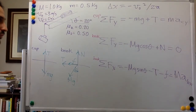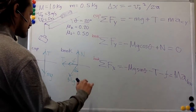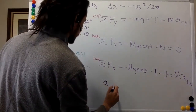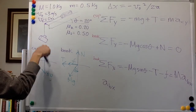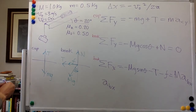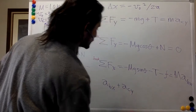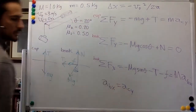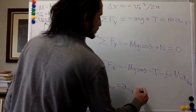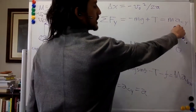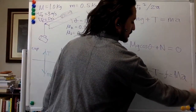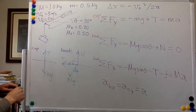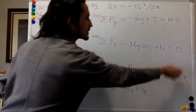We have one more equation: the acceleration constraint. If the book accelerates in the positive x direction, the cup accelerates in the positive y direction equally. We can call both of those 'a' and get rid of the subscripts. The cup and the book are connected, so they move together with the same acceleration — there's only one acceleration in the system.